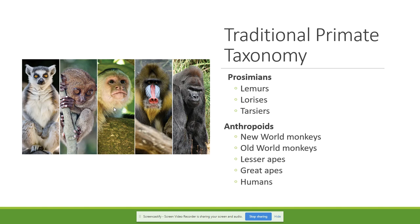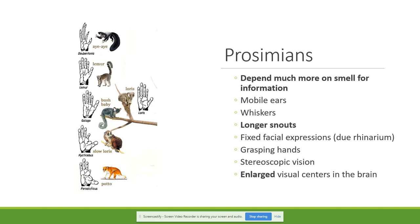Before moving on, let's look at the prosimians more closely. In mammals, the most important sense is the sense of smell — for example, a dog depends heavily on smell. In primates, especially more complex ones, the most important sense shifts to sight. But in the case of prosimians, they still have a strong dependence on smell. Prosimians have mobile ears, whiskers, a longer snout, and fixed facial expressions due to the rhinarium. They also have grasping hands and stereoscopic vision.